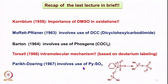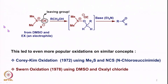Parikh and Doering then reported activation of DMSO using a pyridine-sulfur trioxide complex, where the sulfur species acts as an electrophile to activate DMSO, forming an intermediate that allows oxidation to take place. Essentially, DMSO is activated by an electrophile — whether DCC, phosgene, or pyridine-sulfur trioxide — to form an intermediate where the oxygen of DMSO reacts with the electrophile to form a leaving group.